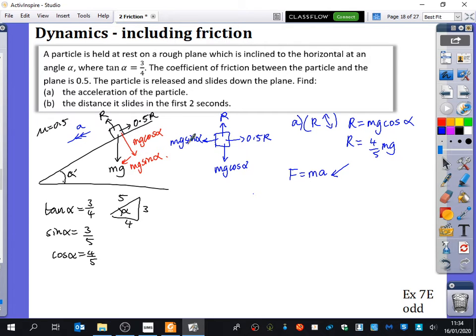So I'm going to do forces down the slope, mg sin alpha minus 0.5r. That's my resultant force. This one take away this one. And that equals the mass times the acceleration. Looks like I'm going to get a few unknowns, but let's hope that something's going to work out here. Now sin alpha is three-fifths. So I get three-fifths mg minus 0.5 times r. What's 0.5 times four-fifths? Two-fifths. Two-fifths mg equals ma.